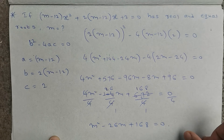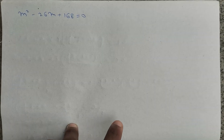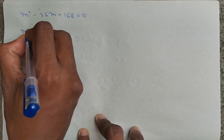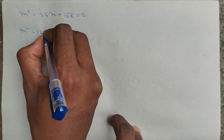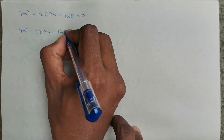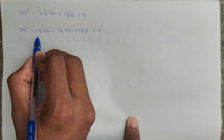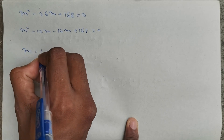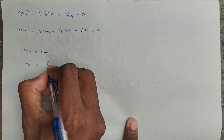By splitting the middle term into two terms, we need to find the value of m. The term minus 26m can be written as minus 12m minus 14m. So m² minus 12m minus 14m plus 168 equals 0. Here minus 12 gives m equals plus 12, and minus 14 gives m equals plus 14.